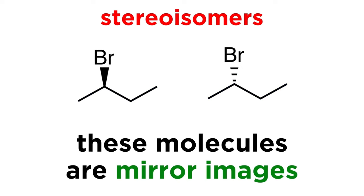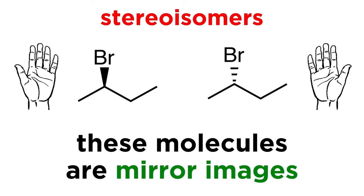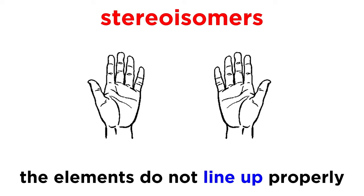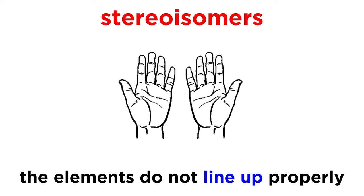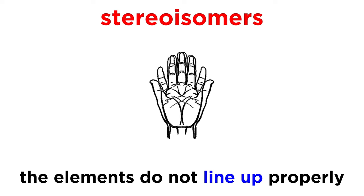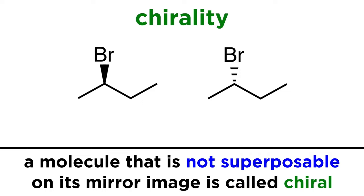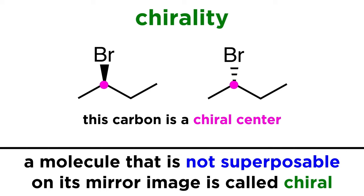These molecules are mirror images, just like your hands are mirror images. Your hands are not superposable — if one hand is placed over the other with the palms facing the same direction, we can't get the fingers to line up properly. When a molecule is not superposable on its mirror image in precisely this manner, this molecule is said to be chiral, and specifically this carbon is said to be a chiral center.